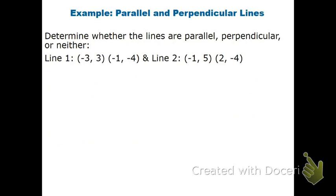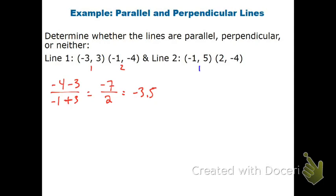To figure out whether lines are parallel, perpendicular, or neither, I'll use the slope formula. For the first pair, label the points 1 and 2: (negative 4 minus 3) over (negative 1 minus negative 3) gives negative 7 over 2, which is negative 3.5. For the second pair: (negative 4 minus 5) over (2 minus negative 1) gives negative 9 over 3, which is negative 3. Since negative 3 and negative 3.5 are neither equal nor opposite reciprocals, these are neither parallel nor perpendicular.